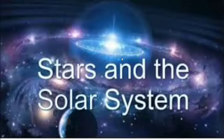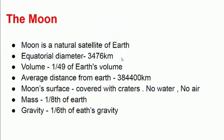Hello again. Today is our last topic of the chapter Stars and the Solar System. What do you mean by moon? Moon is actually a natural satellite which revolves around the earth. Its equatorial diameter is 3,476 km, whereas its volume is 1/49th of earth's volume — meaning you can fit 49 moons in one earth. The average distance from earth is 384,400 km.